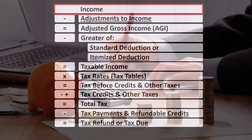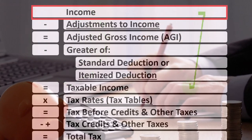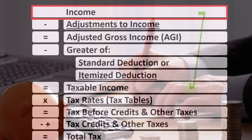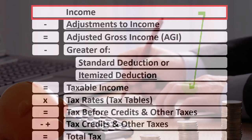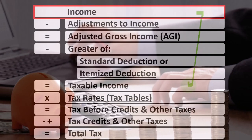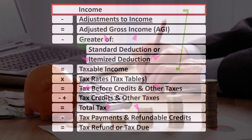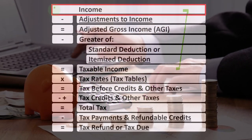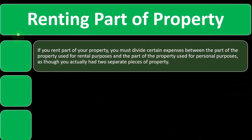Looking at the income tax formula, we're focused on line one income. The first half of the income tax formula is, in essence, an income statement — just an outline — with other forms and schedules flowing into these line items. One of those is Schedule E, an income statement in and of itself, having rental income minus rental expenses, with the net rental income flowing into line one income of our income tax formula.